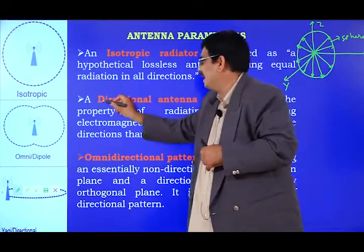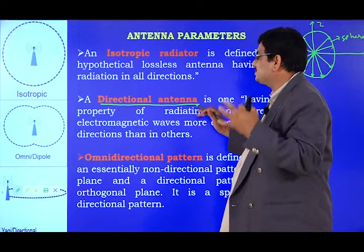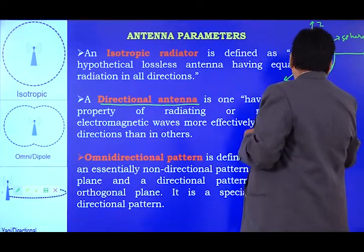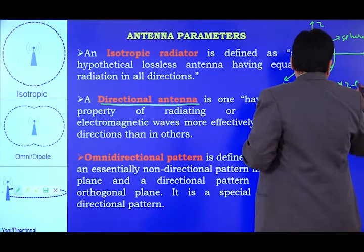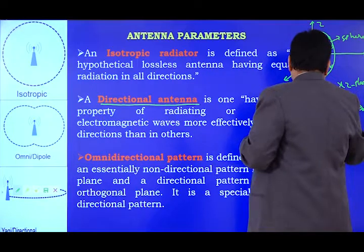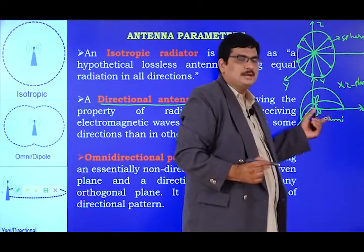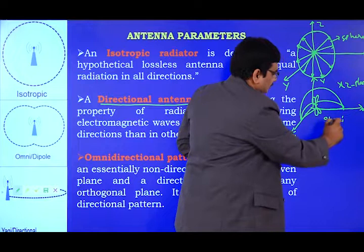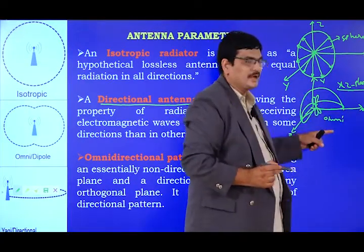The second type is the directional antenna, which operates in one plane only and is non-directional in another plane. For example, if my antenna operates in the X-Z plane, it has its radiation pattern in that plane, and in the other direction it is non-directional. An omnidirectional antenna operates efficiently in one specific plane while being non-directional in the orthogonal direction.